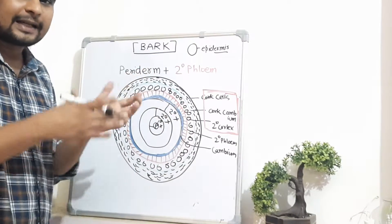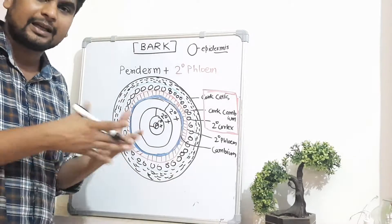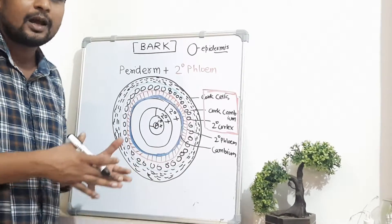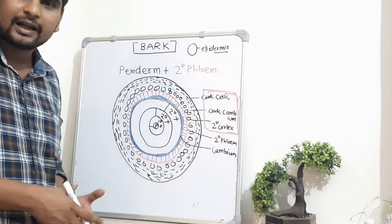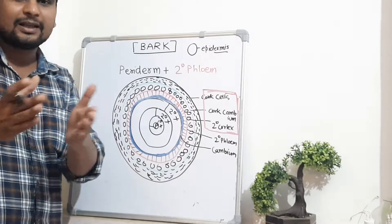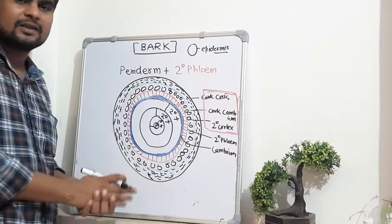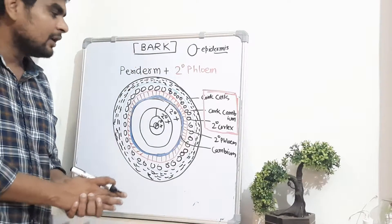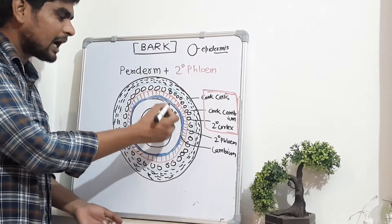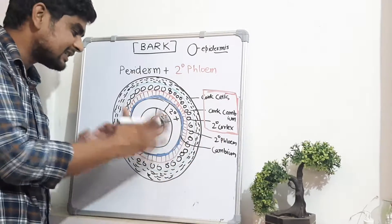Details about how the cambium activates, divides, its seasonal activity, and structure can be found in the plant anatomy playlist. Right now, we will only discuss bark. Technically, bark refers to the outermost parts external to the cambium.